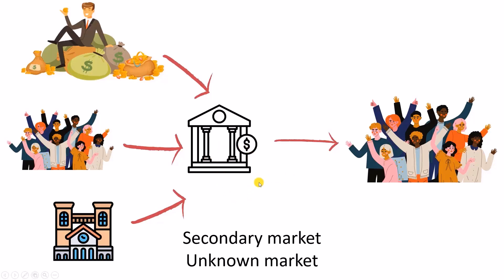This secondary market is also known as the 'unknown market,' because if you want to buy shares of a particular company, you will not know from whom they are coming. Or if someone wants to sell shares to others, they will not know to whom they are selling. Through the broker and through the exchange, the transaction happens, and the buyer and seller remain unknown to each other. So it is known as the unknown market, and people like you and me buy from the stock exchange through a stock broker — this is called the secondary market.